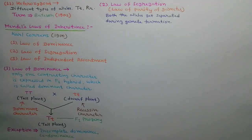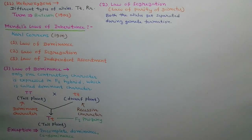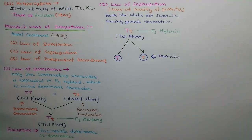The Law of Segregation is also known as the Law of Purity of Gametes. According to this law, both alleles get separated during the formation of gametes — this is called segregation. As shown in the diagram, T and T alleles get separated into gametes.